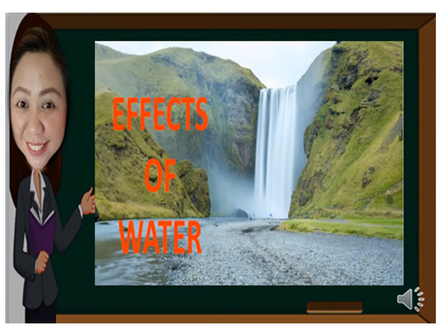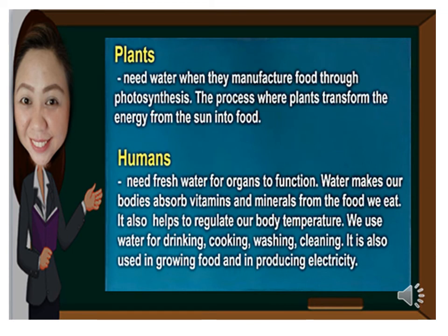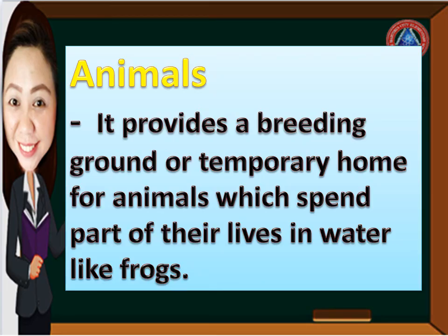What about the effects of water? Water is very important for the survival of living things, like plants. Plants need water when they manufacture food through photosynthesis — the process where plants transform energy from the sun into food. Humans need fresh water for organs to function. Water helps our bodies absorb vitamins and minerals from food and helps regulate body temperature. We use water for drinking, cooking, washing, and cleaning. It is also used in growing food and producing electricity. For animals, water provides a breeding ground or temporary home for animals that spend part of their lives in water, like frogs.